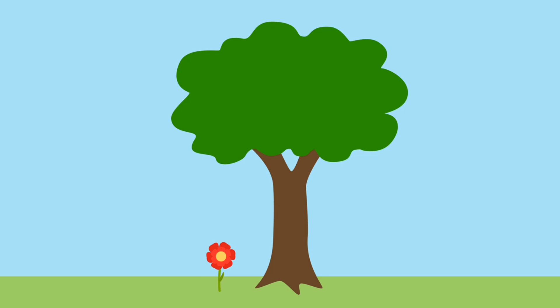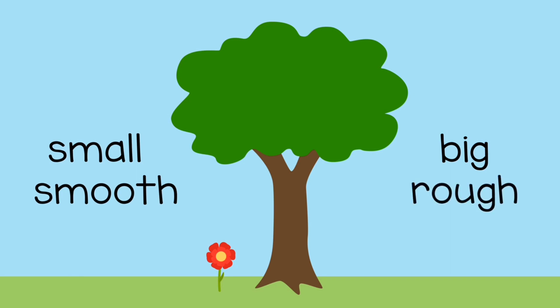The child could say, the flower is small and the tree is big. You could say, the flower stem is smooth and the tree trunk is rough. The child might say, the flower is red and the tree is green.